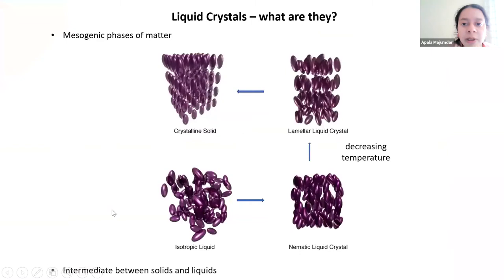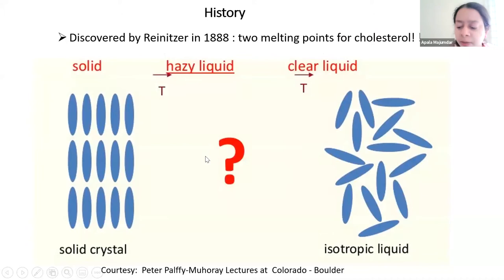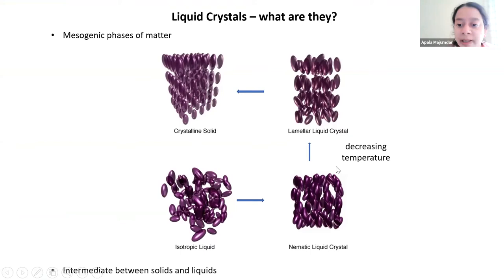I will start off by telling you what liquid crystals actually are. Liquid crystals, as the name suggests, are materials that are somewhere between solids and liquids. This is a schematic picture of a phase transition from a liquid to a solid, induced by decreasing the temperature. But somewhere in between, for certain materials, one would observe intermediate liquid crystalline phases, which are more ordered than a liquid but less ordered than a solid.